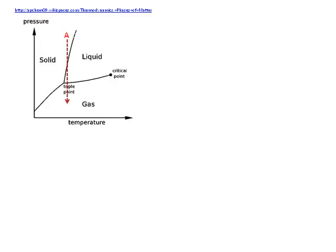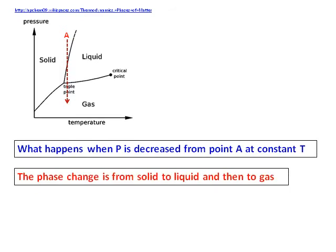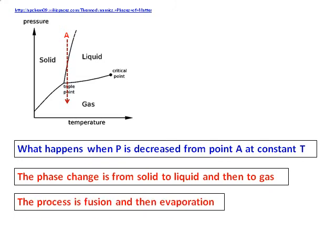One more question based on the phase diagram: what happens when pressure is decreased from point A at constant temperature? Looking at the line given, you can see that it starts as a solid, then becomes a liquid, and then it becomes a gas. Therefore, the process is fusion in the beginning, and then evaporation.